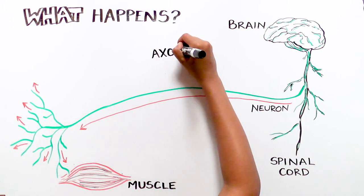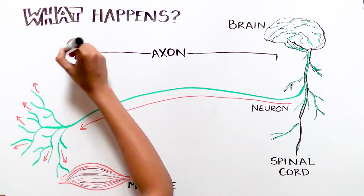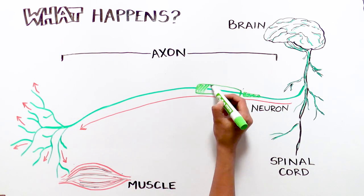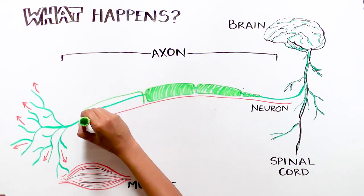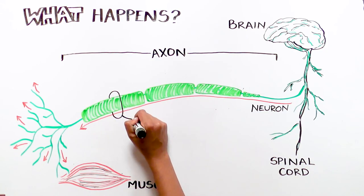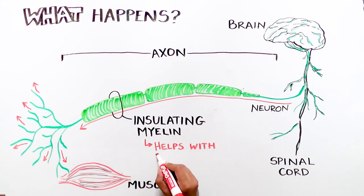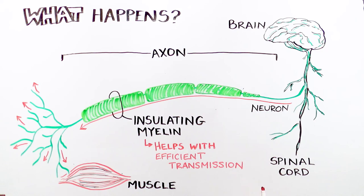The information is delivered through the part of the neuron called the axon, which is a long projection that acts like an electrical wire. Axons carry the information and are wrapped in a protective material called myelin, which helps the information transmitted along the neurons flow more efficiently.